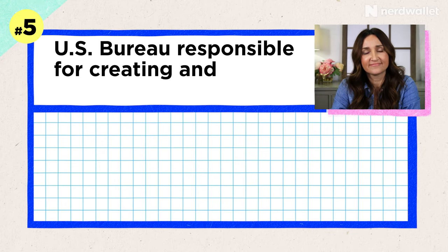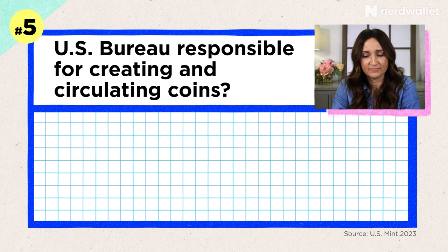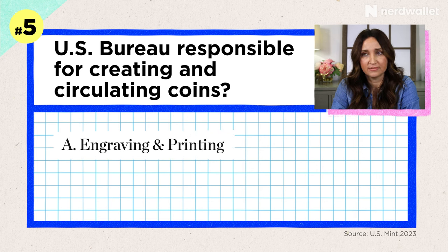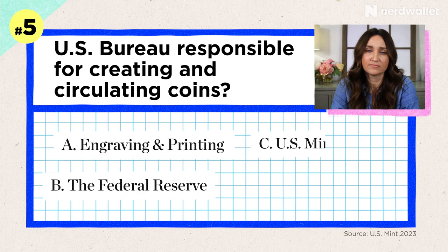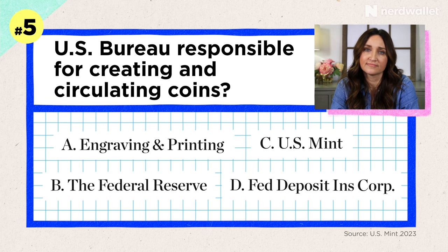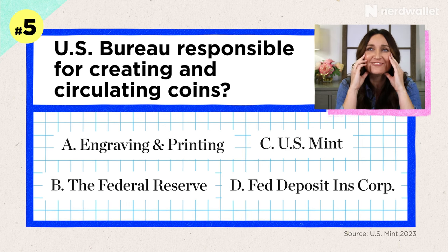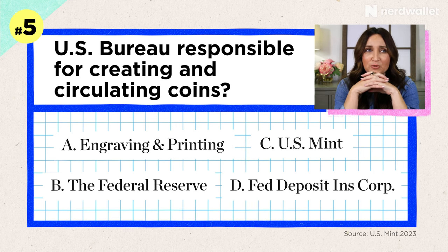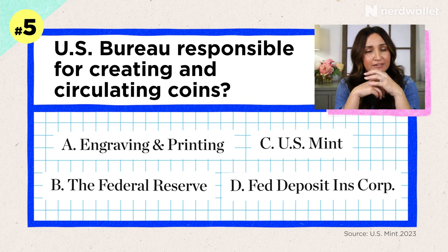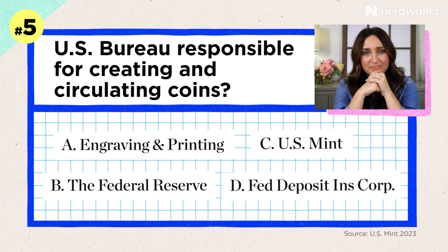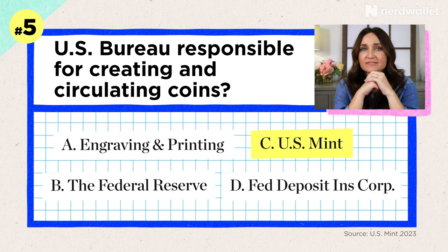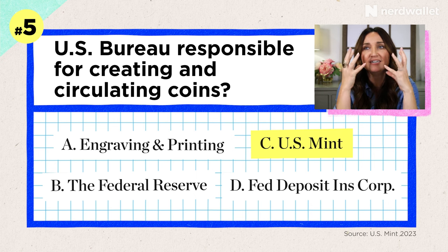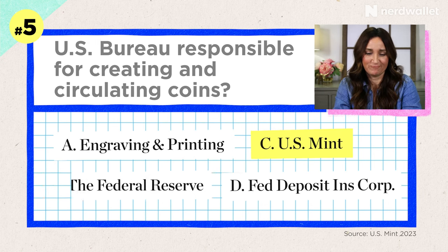Question number five, another multiple choice: which U.S. Treasury Bureau is responsible for creating and circulating coins? Is it A, the Bureau of Engraving and Printing, B, the Federal Reserve, C, the United States Mint, or D, the Federal Deposit Insurance Corp? I'm going to go with A, the Bureau of Engraving and Printing. That's a good guess — they actually handle paper money. Coins are C, the U.S. Mint. I was between those two. That was a good line of thinking — you weren't completely far off.